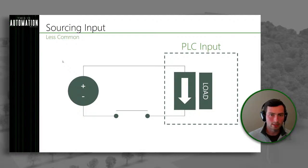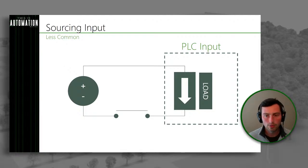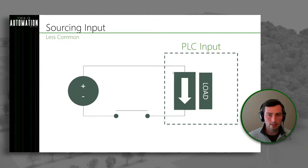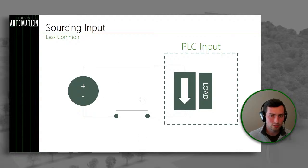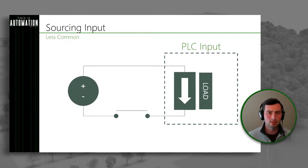Now let's look at the opposite case — a sourcing input. This one is a little bit less common. A sourcing input is going to be providing a voltage source. You can see in this case that our PLC input is actually providing the voltage source to the switch, which is a little confusing and kind of counterintuitive — which is why we don't see this as often in the field. But this is what we call a sourcing input.